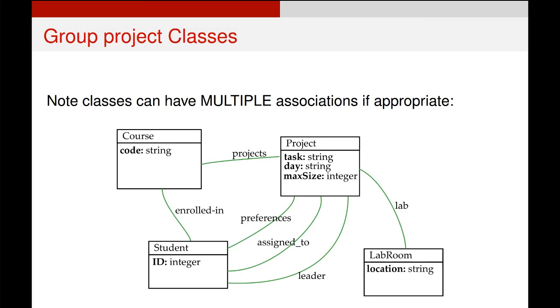But if you go back again to that text description, you'll notice that there are actually multiple associations between student and project. There's not just the project students are assigned to, but students also have a list of projects as preferences, and each project will also have a leader student. And we can add multiple associations in between the same classes, as long as we use different descriptors to describe them.